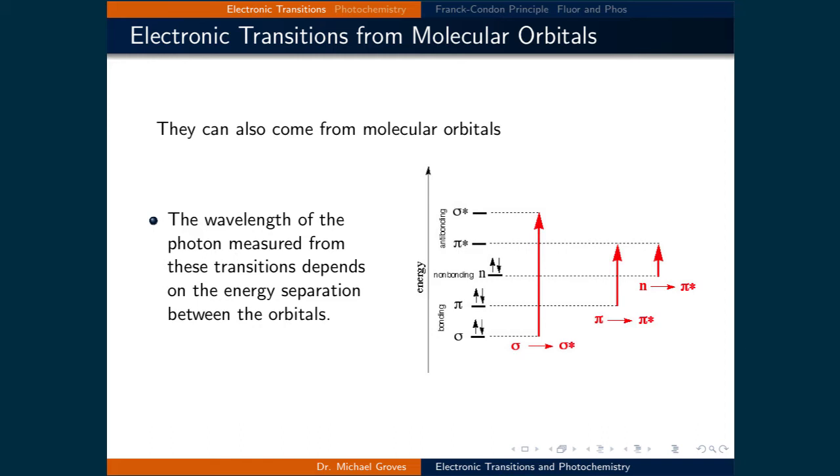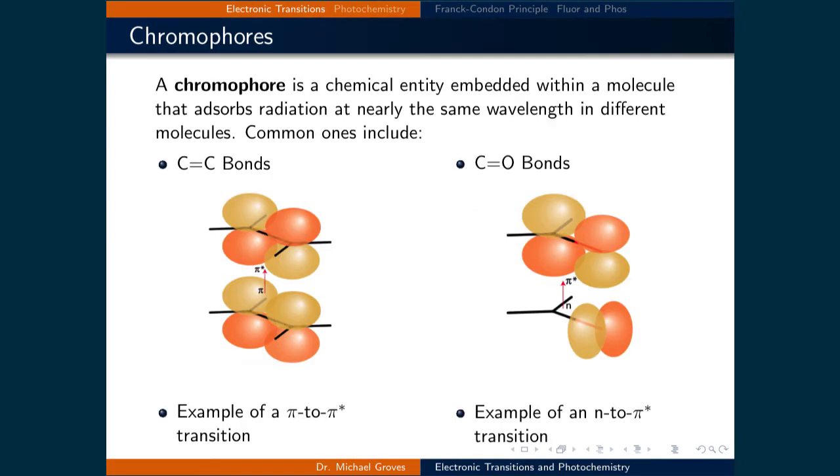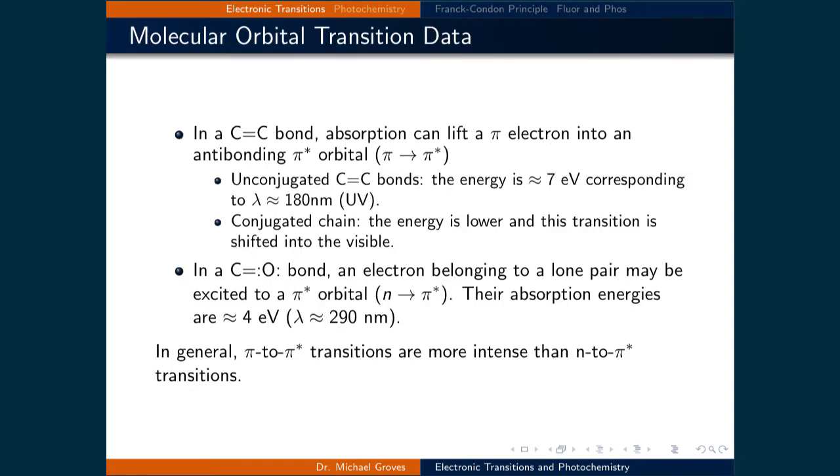By exciting electrons in filled orbitals to empty orbitals, molecules absorb light and then re-emit it as the molecule relaxes. A chromophore is a chemical entity embedded within a molecule that absorbs radiation at nearly the same wavelength in different molecules. Common ones include the carbon-carbon double bond, where the transition is between an occupied pi orbital to an unfilled pi star orbital, and the carbon-oxygen double bond, where an electron in a non-bonding lone pair can be excited to an unfilled pi star molecular orbital. These two types of transitions are commonly observed in spectroscopy experiments in molecules with these functional groups.